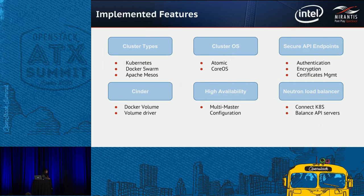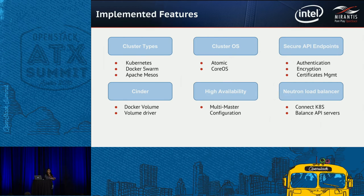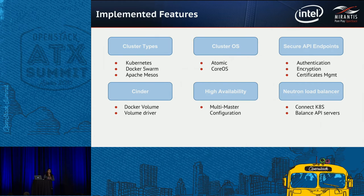Now the most important slide: features in Magnum. We currently support Fedora Atomic images and CoreOS images. For secure API endpoints: when we deploy a Bay, Magnum services run on one node and Docker services on another, so communication needs to be secured. We make this secure using TLS certificates, managed within Magnum — you can store them in Magnum or use Barbican, which is configurable. Certificates are encrypted before being stored.